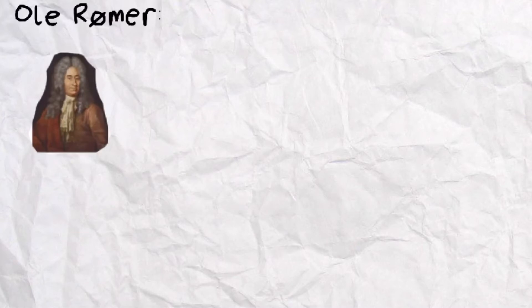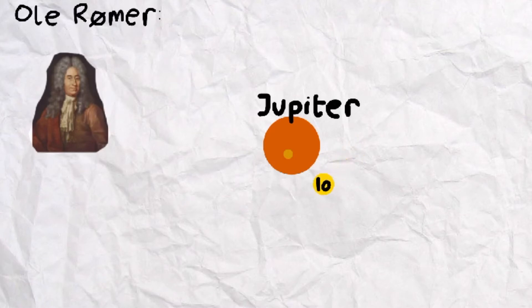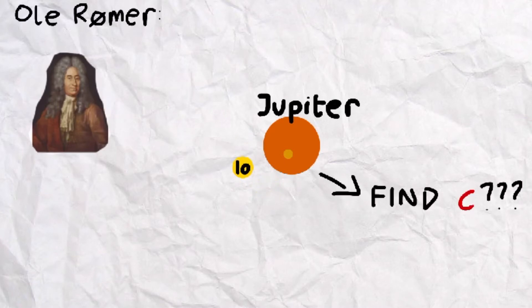It all started with the Danish astronomer Ole Rømer. In the 17th century, he used the orbital period of one of Jupiter's moons, Io, to determine the value of c. However, the breakthrough was actually unanticipated and Rømer did not expect such an awesome discovery. So how did all of this work?